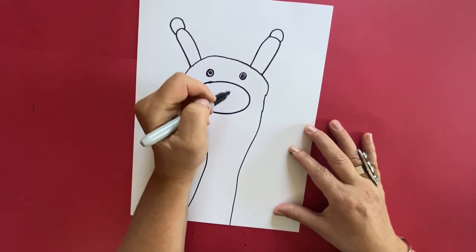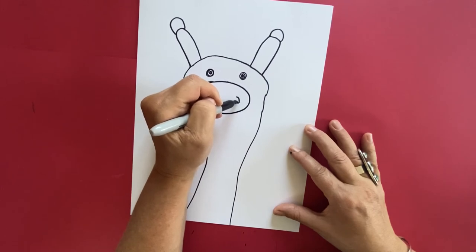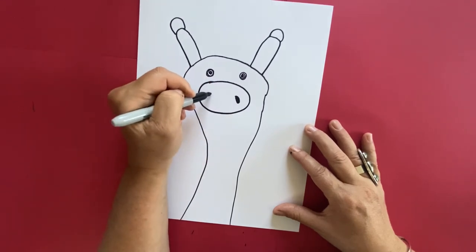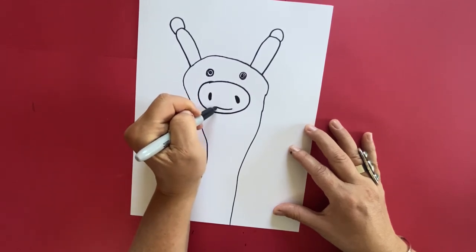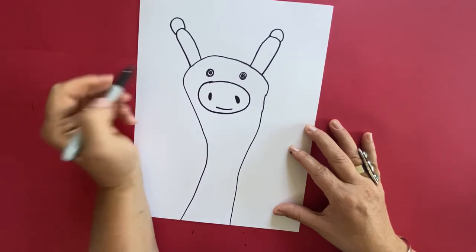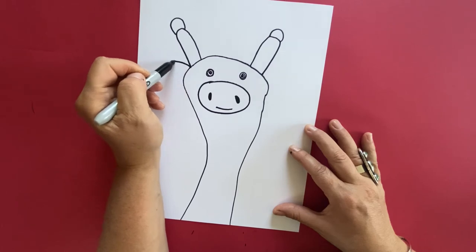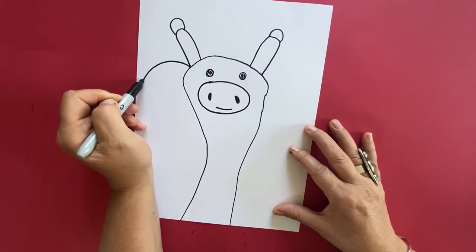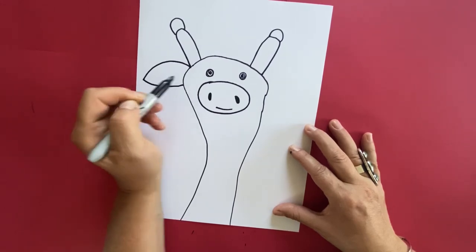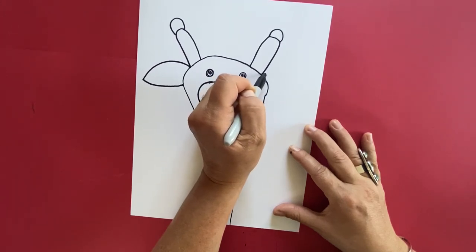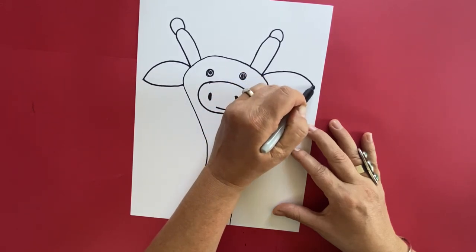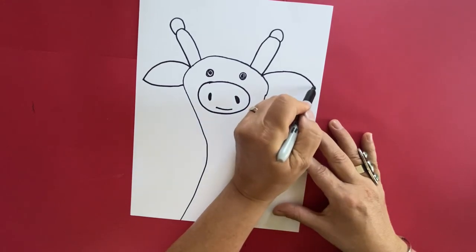All right let's make some nostril holes so our giraffe can breathe and you can make ovals. Good job kind of looks like a pig right now doesn't it and let's give our little giraffe a little smile by making a curve line under the nostrils. All right it still does not look like a giraffe we need to make some ears so make a curve line I call that my rainbow line stop and then you're gonna make a smile line going back into the head of the giraffe.